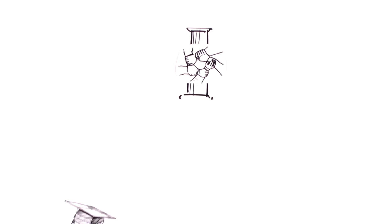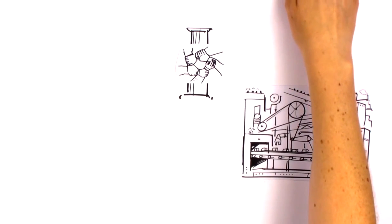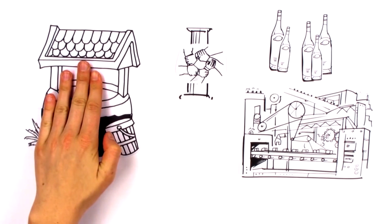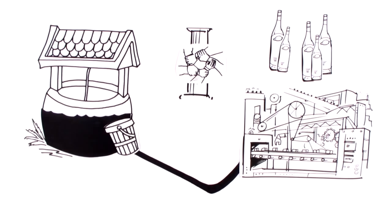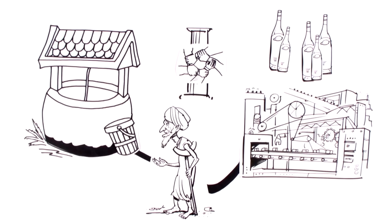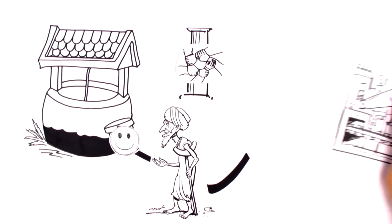One beverage manufacturer from an industrialised country has quite a bit of catching up to do here. It repeatedly takes over the wells of villages in India, because it needs the water to make its products there. That isn't very sustainable. Peter doesn't think so either — at least a little water should be left in the wells for the Indian population.